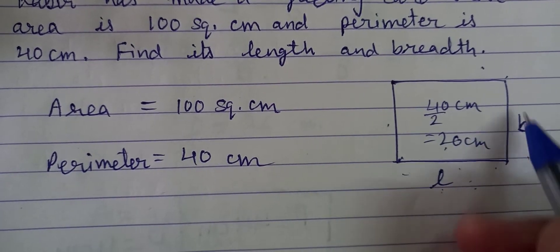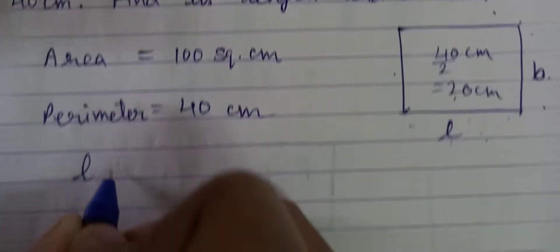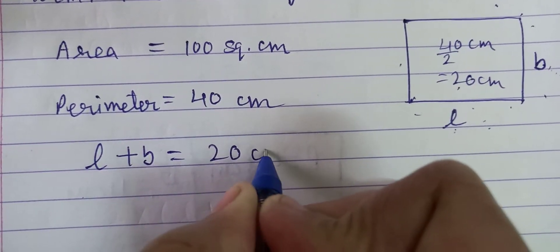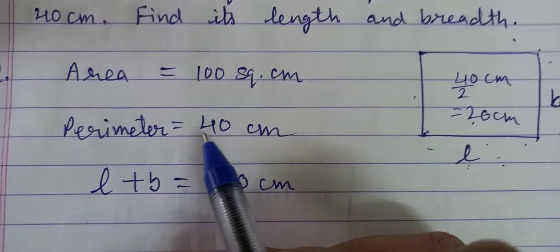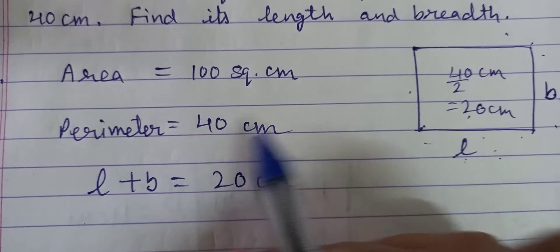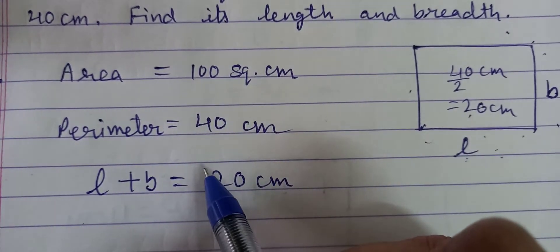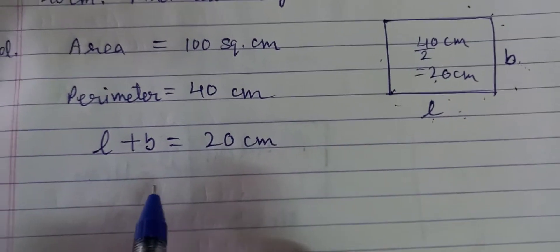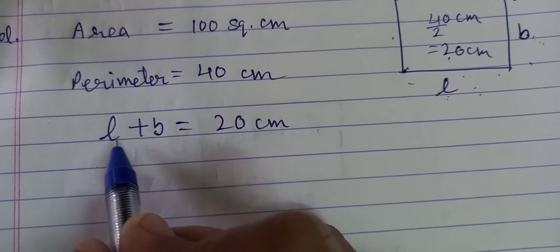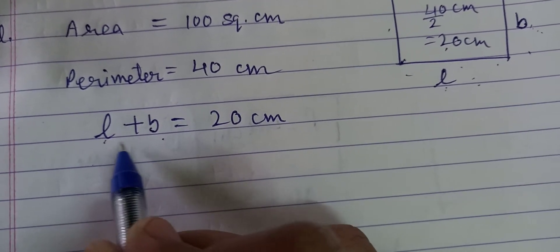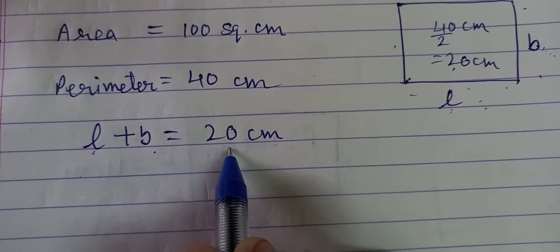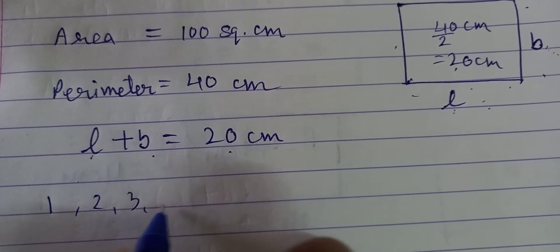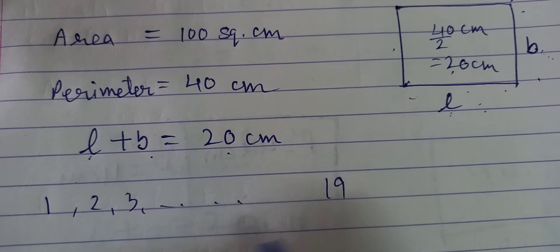It means अब L plus B, जो आपका length और breadth है, यह 20 centimeter होगा. क्योंकि perimeter 40 है, rectangle है यह, और इसका 40 का half क्या है? 20. So it means, कोई दो numbers जिनको add करें और 20 आये, तो वो क्या हो सकते हैं? वो 1 से लेके 2, 3 and so on, 19 तक.